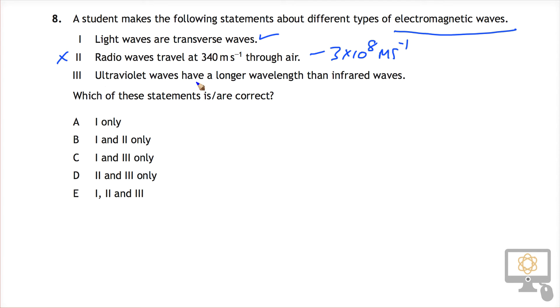Statement 3: ultraviolet waves have a longer wavelength than infrared. Well, we need to think carefully about this one. It's one of those ones where you could easily get wrong.